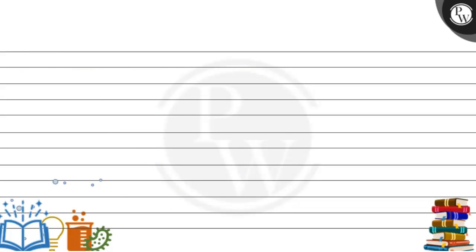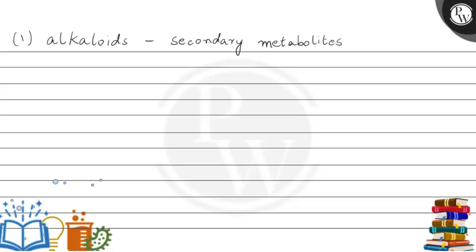Now looking at the options, the first option says alkaloids. Alkaloids are also types of secondary metabolites, but they are nitrogen-containing secondary metabolites. Types of alkaloids include morphine and codeine.